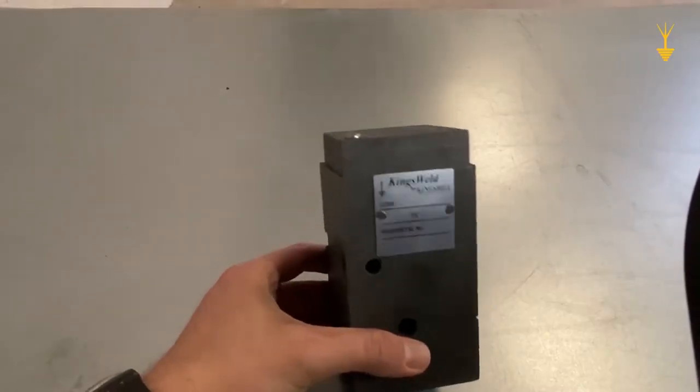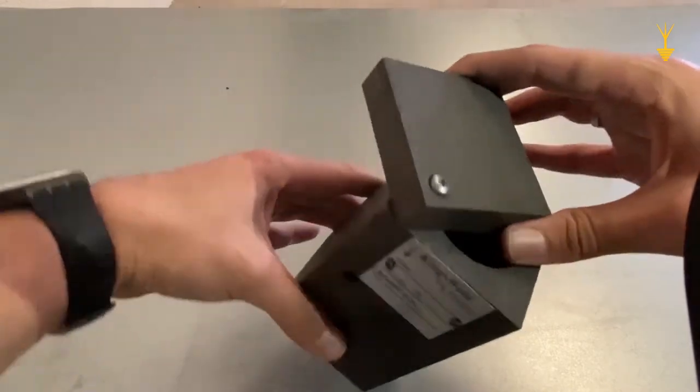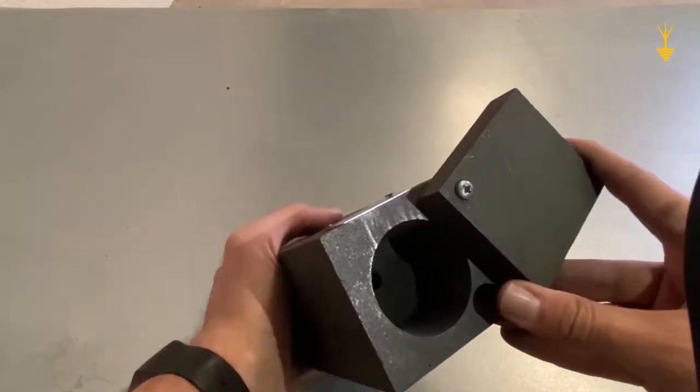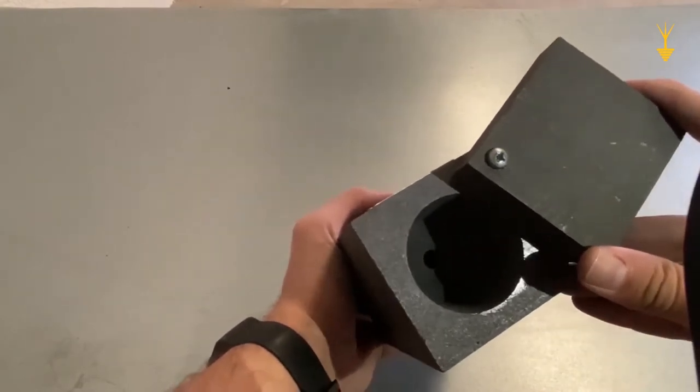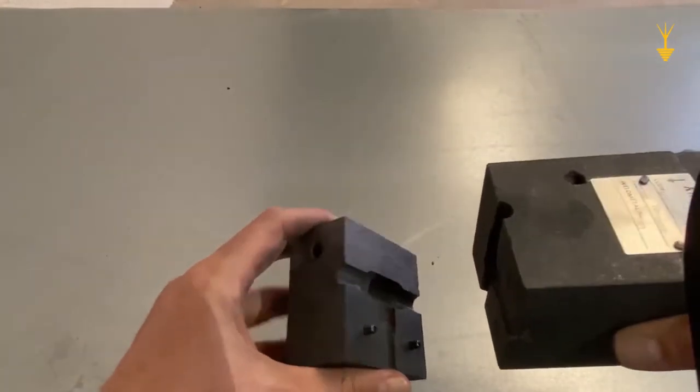The graphite mold itself has three important characteristics. The reaction chamber, or the crucible, the tap hole, which is that hole you can see here at the bottom, and then the weld cavity, where the actual conductors are welded together.